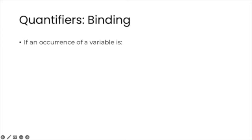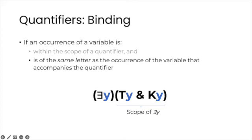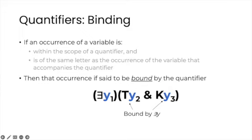The notion of quantifier scope allows us to introduce the idea of binding in this way. If an occurrence of a variable is within the scope of a quantifier, and if that occurrence is of the same letter as the occurrence of the variable that accompanies the quantifier, then that occurrence is said to be bound by the quantifier. So if we assign numbers to the occurrences of the variable y, we can see that the second and third occurrences of y are within the scope of the existential quantifier and share the same variable letter. Therefore, both of these occurrences are bound by the quantifier to the left.